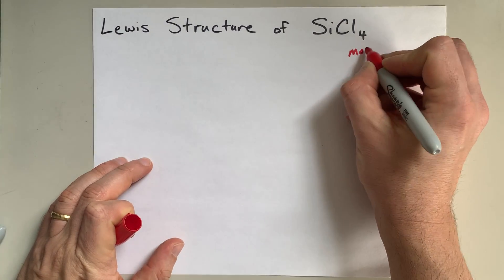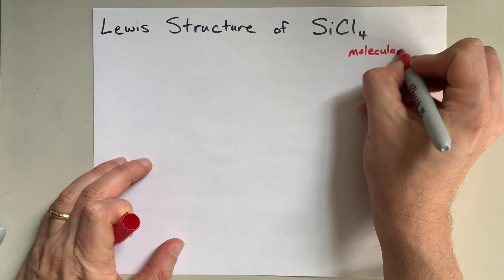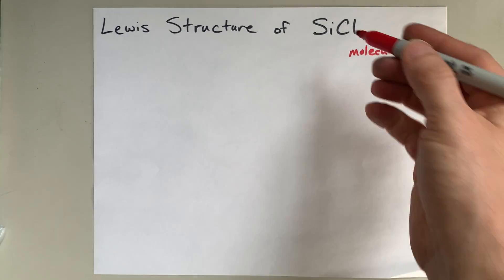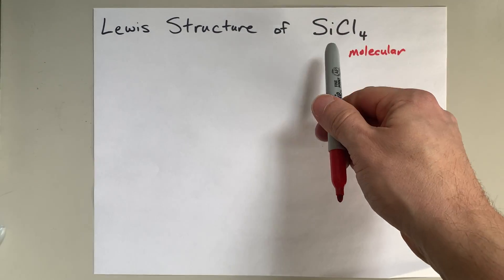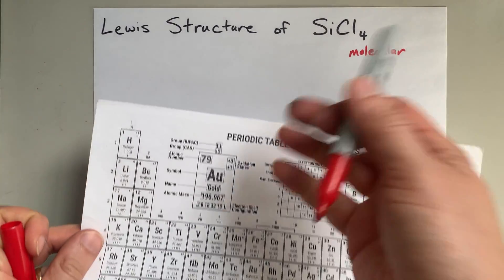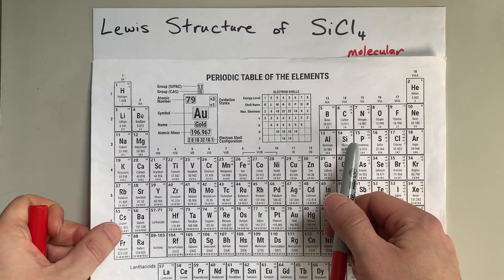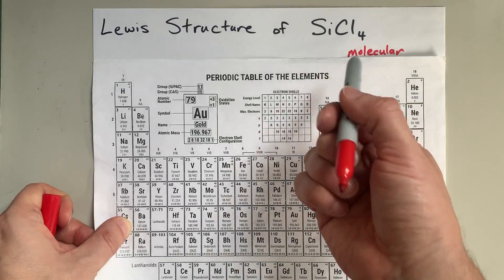SiCl4 ends up being a molecular compound. So we're going to draw this the same way we would as if it was carbon tetrachloride, which is also solidly a molecular thing, because carbon is solidly a non-metal.